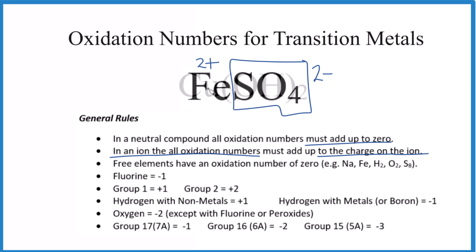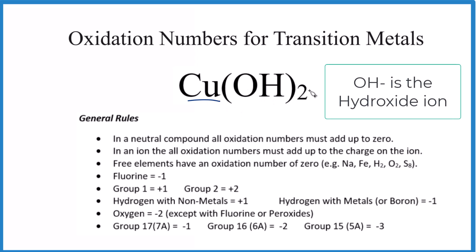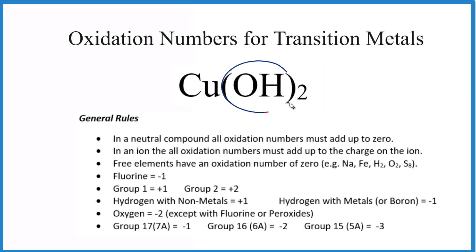Now you try one: find the oxidation number for the transition metal copper in Cu(OH)₂. If you know that the hydroxide ion (OH) bonded to a metal has an ionic charge of one minus, you can figure this out quickly. Two times one minus gives negative two. For everything to add up to zero, copper has to be positive two, so the oxidation number is plus two.